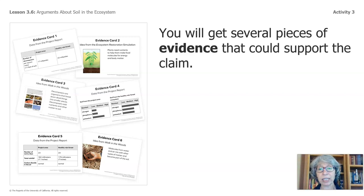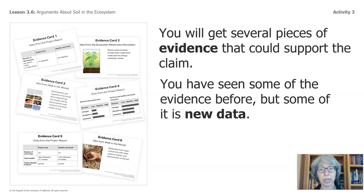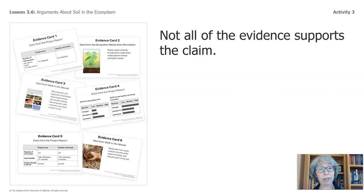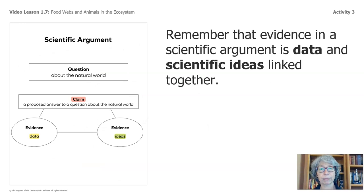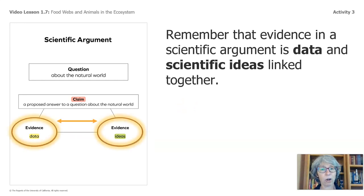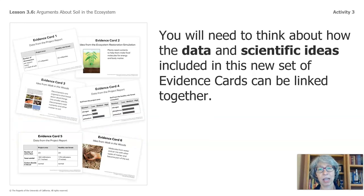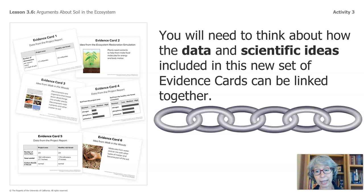The claim is that Cecopia trees aren't growing and thriving because there aren't enough decomposers in the soil. You'll get several pieces of evidence that could support the claim. You've seen some of the evidence before, but some of it is new data. Not all of the evidence supports the claim, so you'll have to do some careful reading. You'll need to decide which pieces of evidence best support the claim and create the strongest argument. Remember that evidence in a scientific argument is data and scientific ideas — these are linked together. You'll need to think about how the scientific ideas and data in this new set of evidence cards can be linked together.